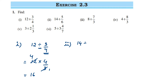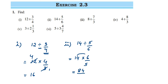Second one: we have 14 divided by 5/6. Same thing — the first number remains the same, division becomes multiplication, and the reciprocal of the second number is 6/5. Can we cancel? No, we cannot cancel them. So we just multiply: 14 times 6 is 84, so the answer is 84/5.